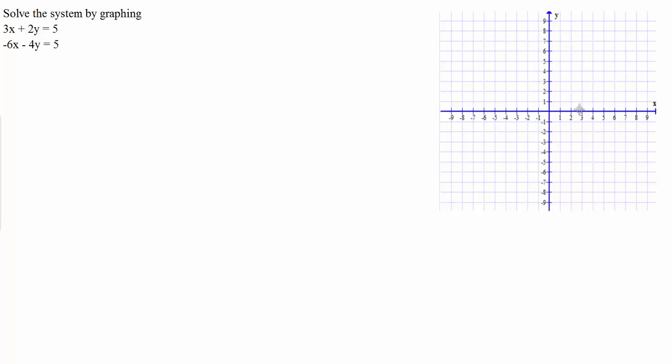Taking a look at our first example, we have our system here. What we know about solving a system by graphing is that we have to graph our entire system. Here we have two equations and we'll be graphing both of these lines. We need to figure out which case we have, because typically when you're solving a system, you have one of three cases.